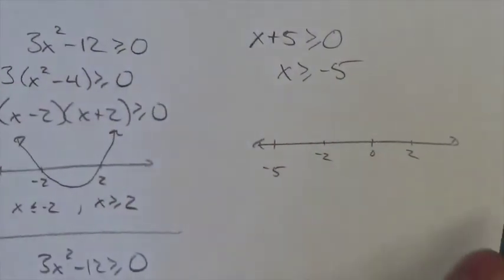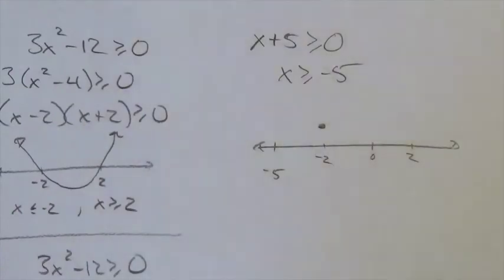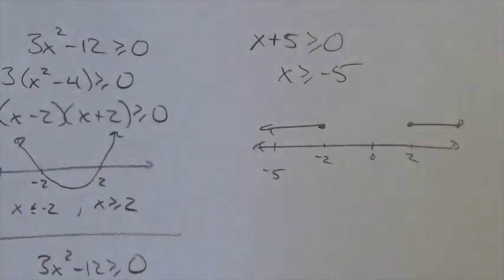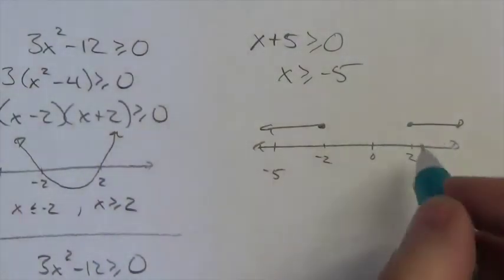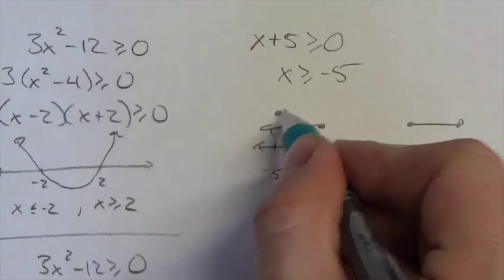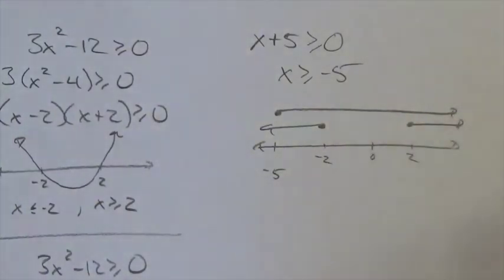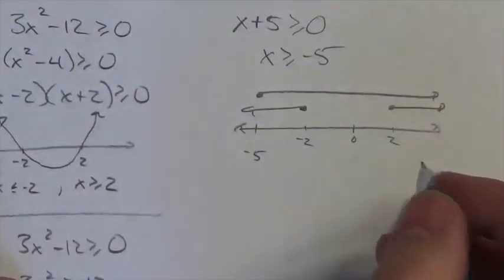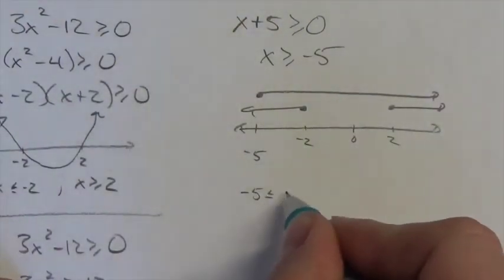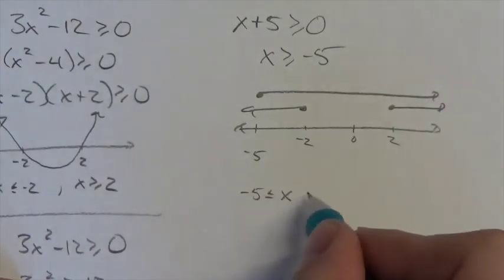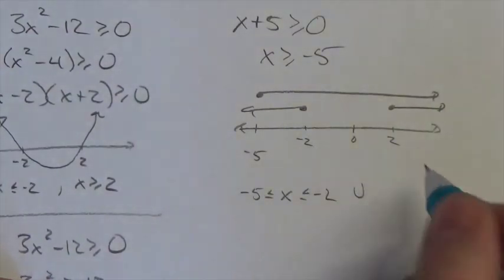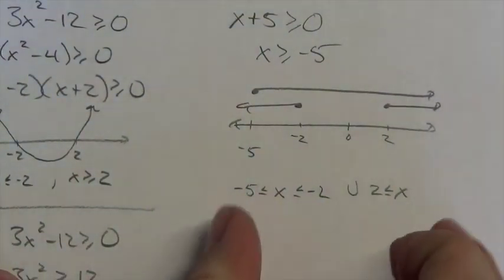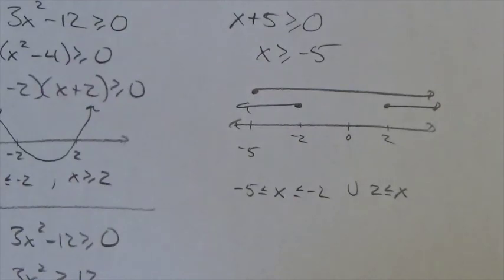Now, from our first set of restrictions here, we found that our restrictions are from negative 2 backwards, from positive 2 forwards. Our other restriction, the one that we just found here, says it's got to be greater than or equal to negative 5. And so the overall restriction is going to come from the overlap of these two. So we see that we're going to have x is restricted to being either from negative 5 out to negative 2, together with values of x greater than 2. So that's your overall restriction for this particular equation.